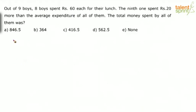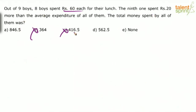Even before you start doing anything, you should know that option B and option C cannot be the answers. Why? Because eight boys spent rupees 60 each, so their total expenditure is eight into 60, which is 480. When you take the total money spent by all nine boys, it should be more than 480. So the answer cannot be 364 or 416.